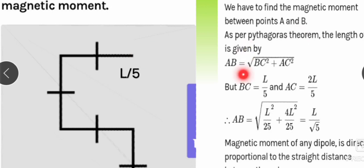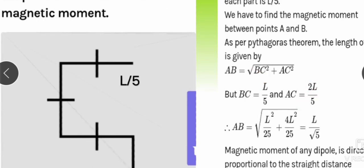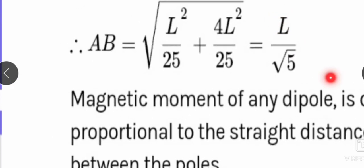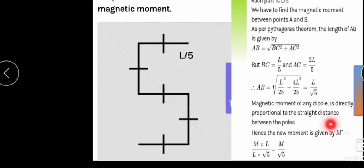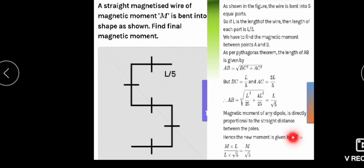Using the Pythagorean theorem, AB = √(BC² + AC²). Here BC = L/5 and AC = 2L/5 from the geometry. So AB = √(L²/25 + 4L²/25) = √(5L²/25) = L/√5. Since magnetic dipole moment is directly proportional to the straight distance between the poles, the new magnetic moment is M × (L/√5)/L = M/√5.